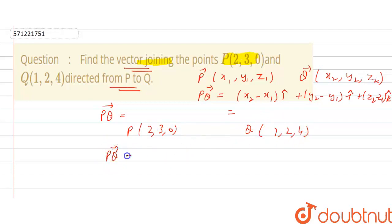So PQ vector is equal to X2-X1, that is 1-2, that is minus 1 i cap plus 2-3, that is minus 1 j cap, plus 4-0, that is 4 k cap. So PQ vector equals minus i cap minus j cap plus 4 k cap.